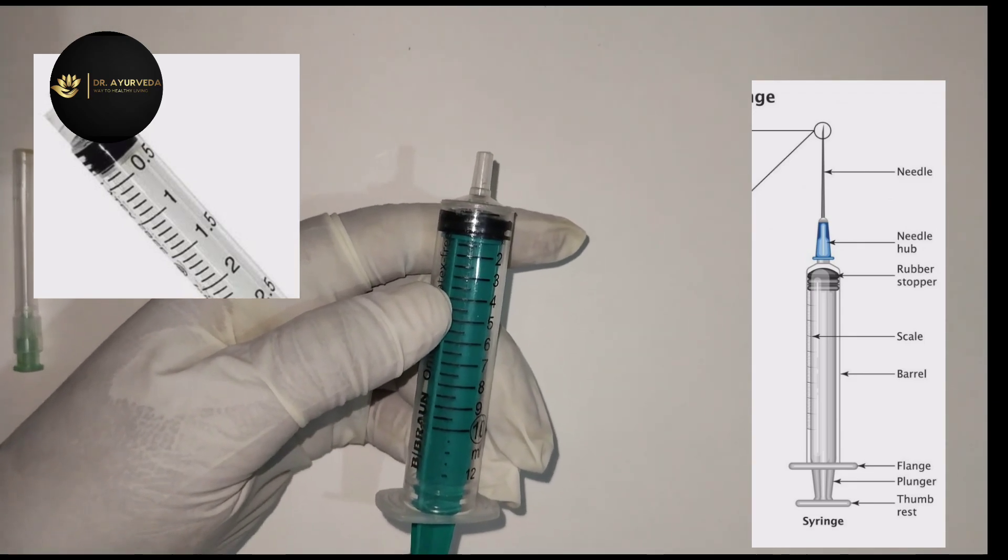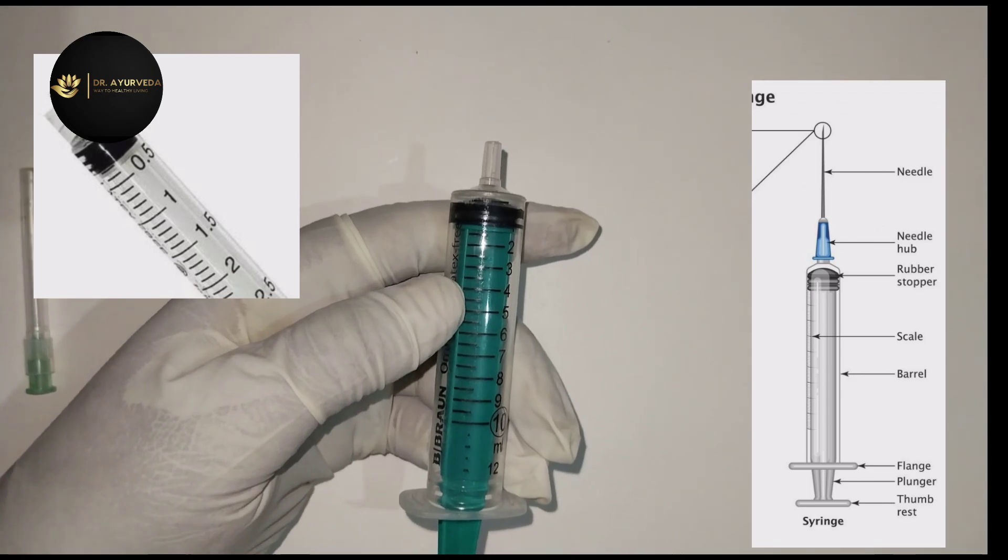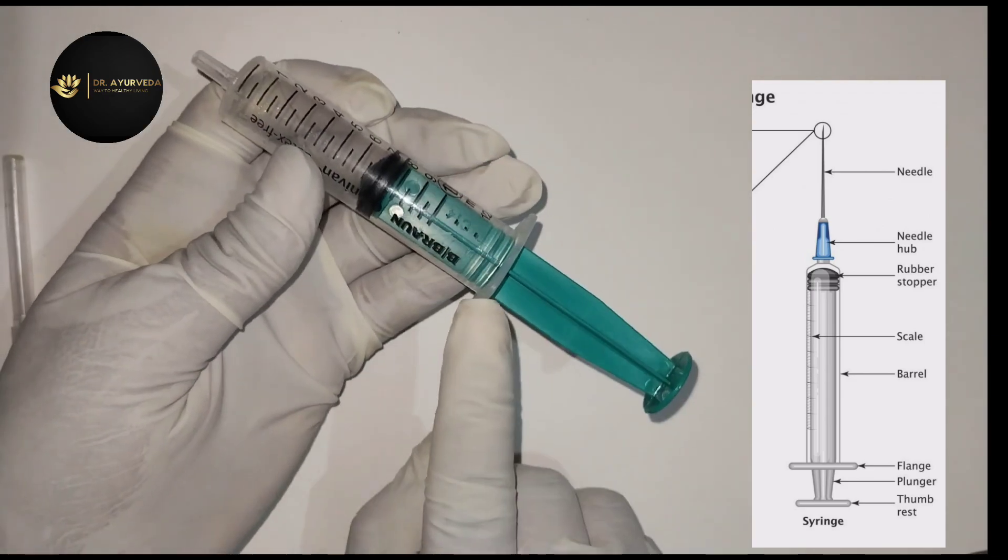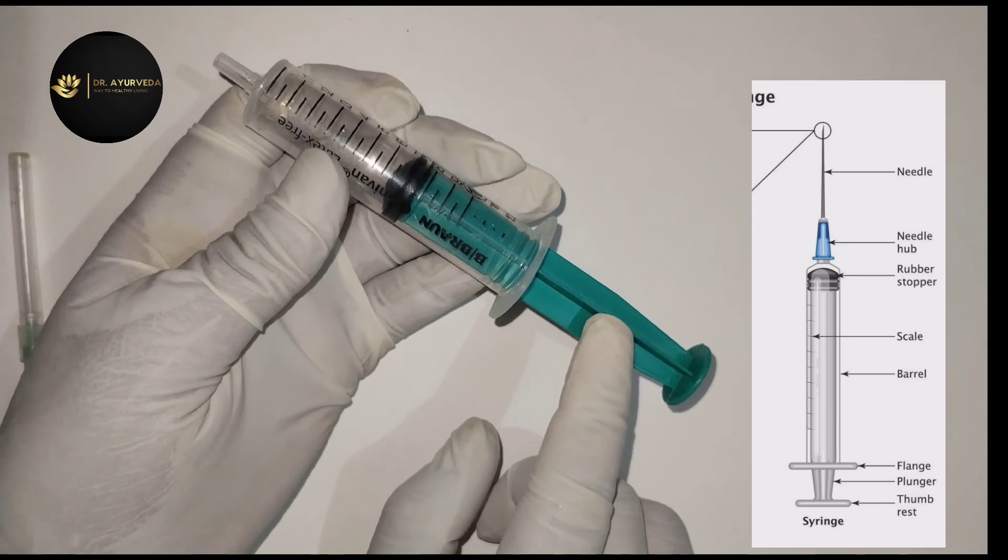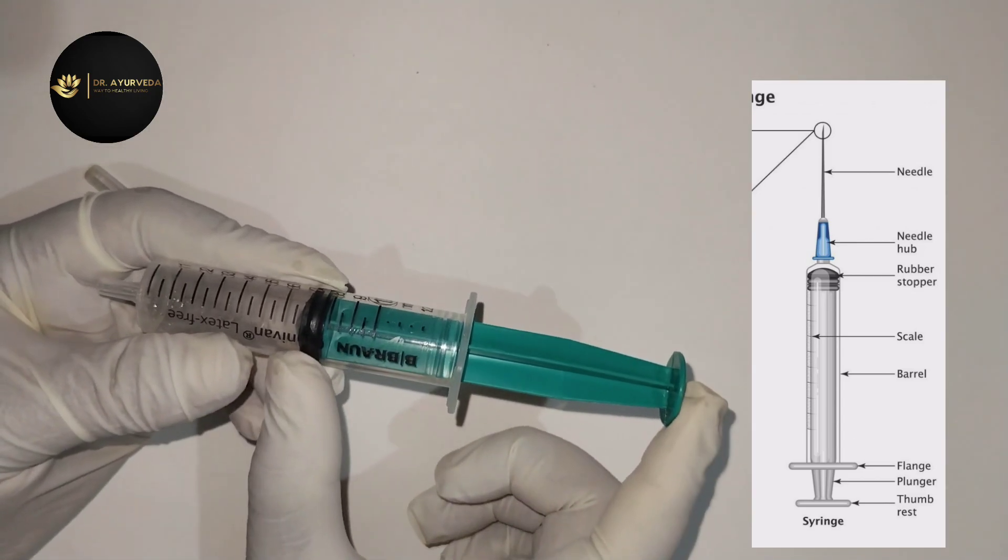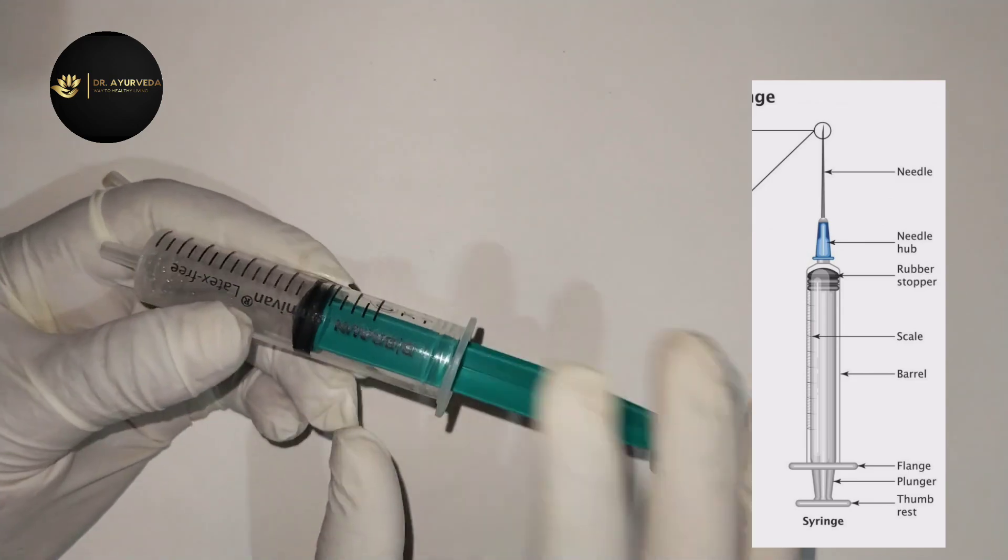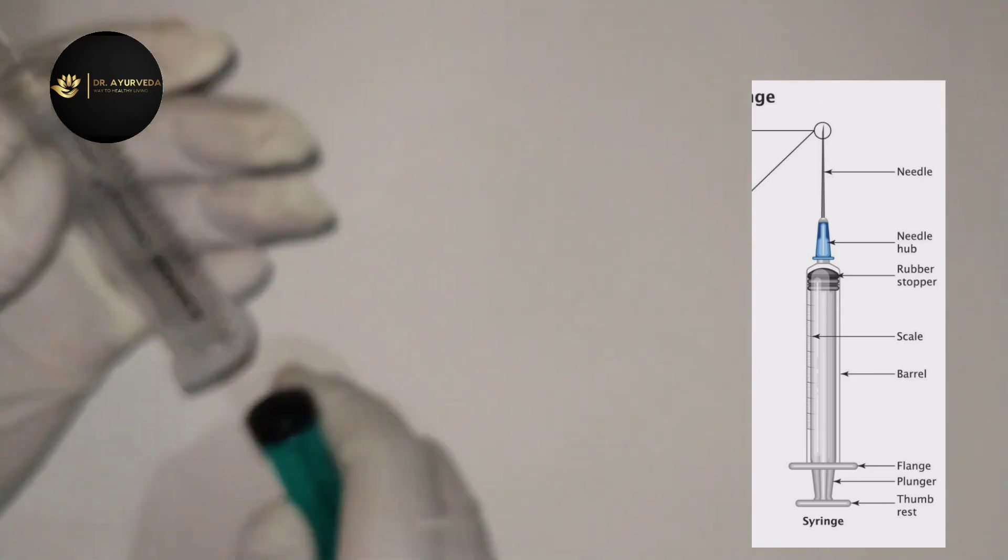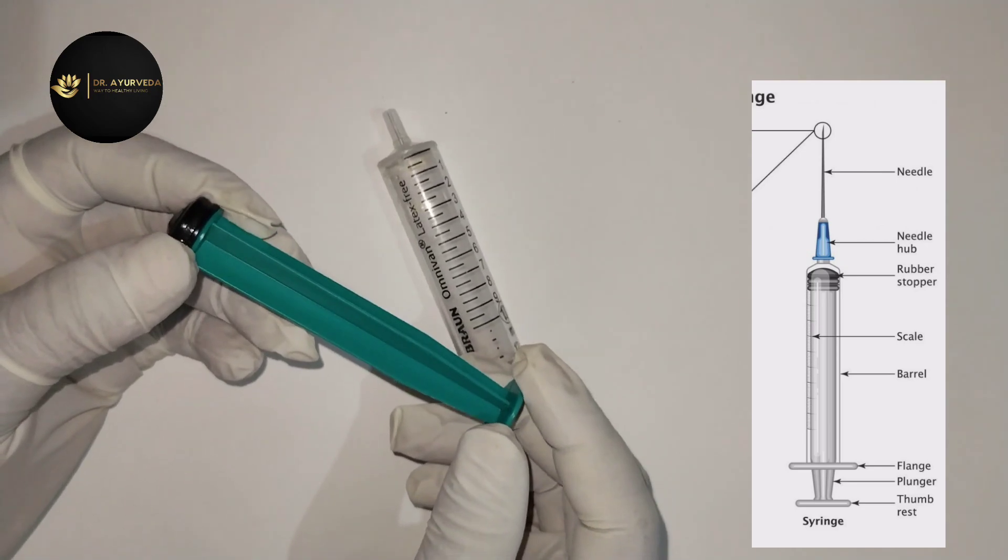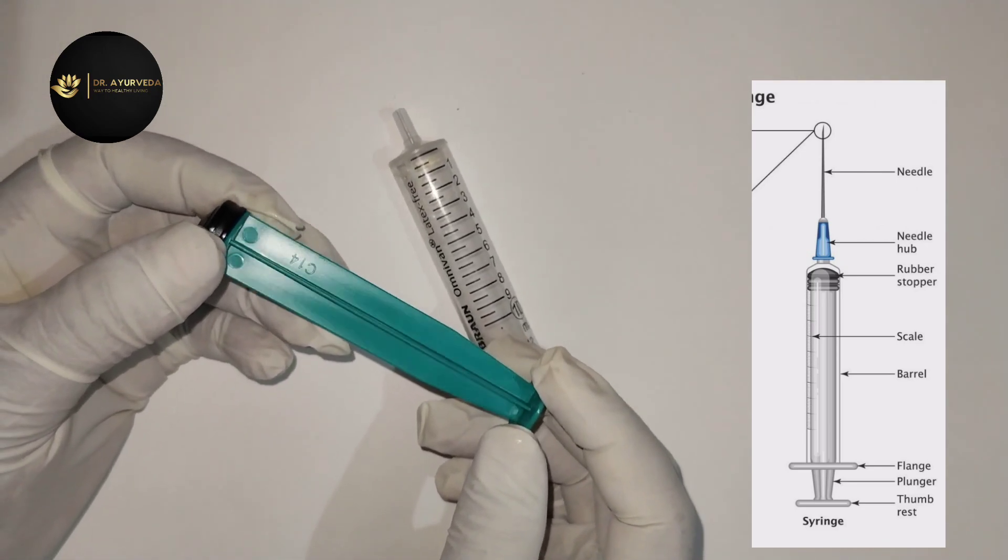Then you can see this area in the back. Here is the green area and here is some black area. This total part is called plunger. If we talk about plunger, there are parts of plunger.